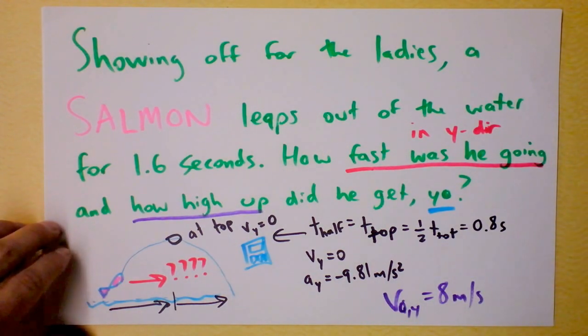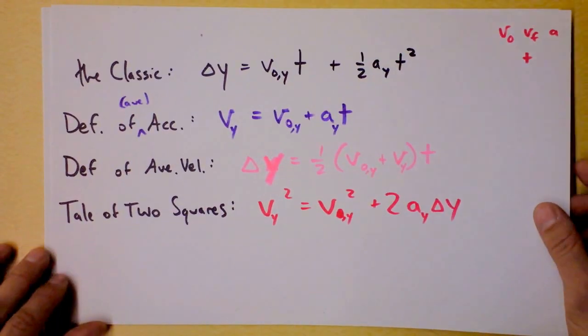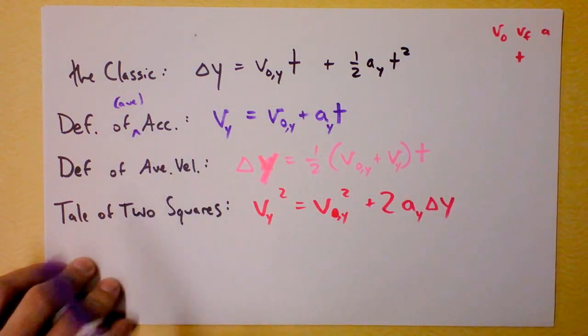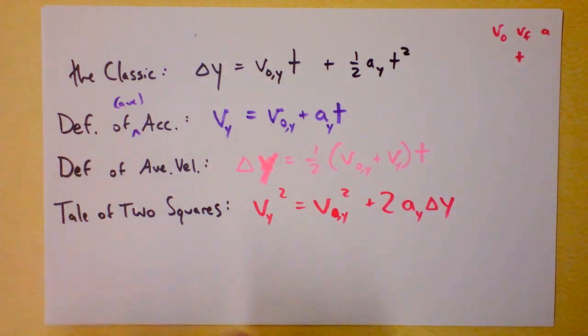While we're doing our collection, I want to go to the list of the four kinematic equations that we'll be using. I like to call them the classic, the definition of average acceleration, the definition of average velocity, and a tale of two squares. And I want to collect some things that we know.